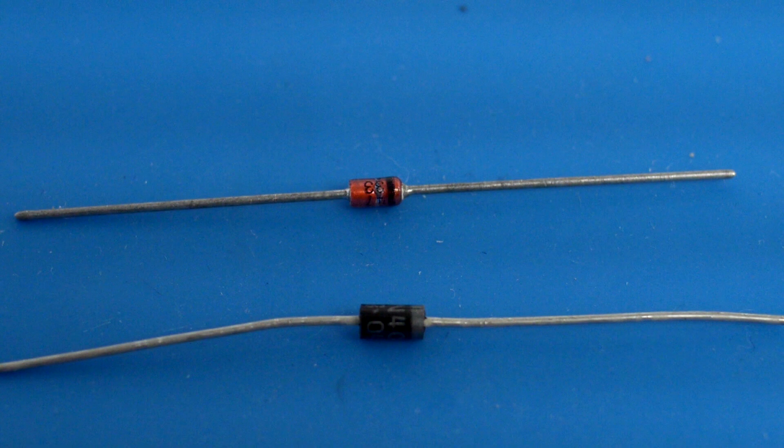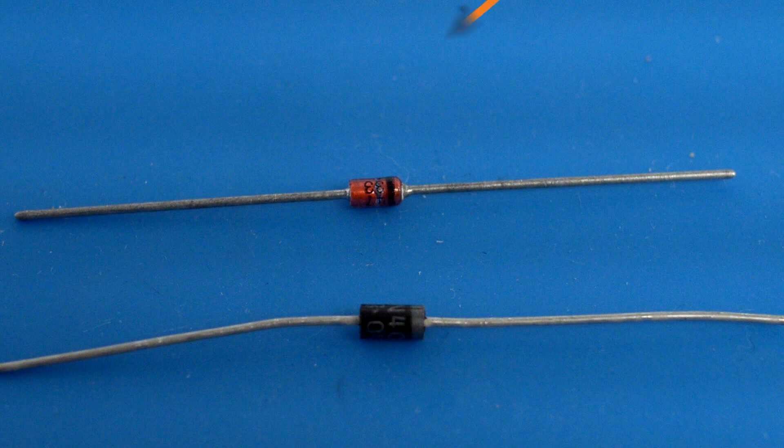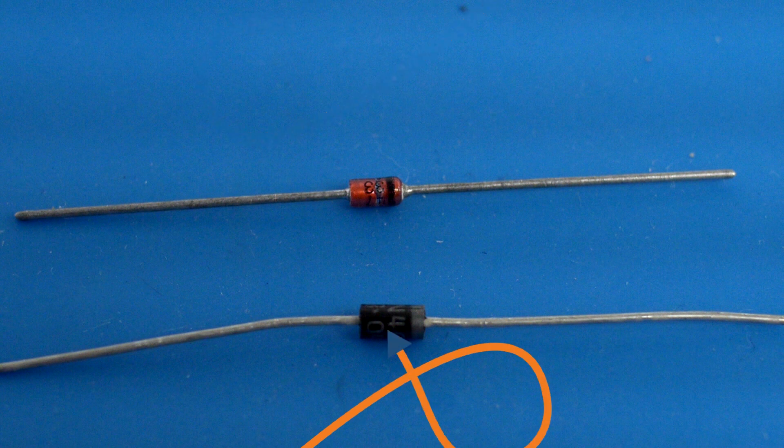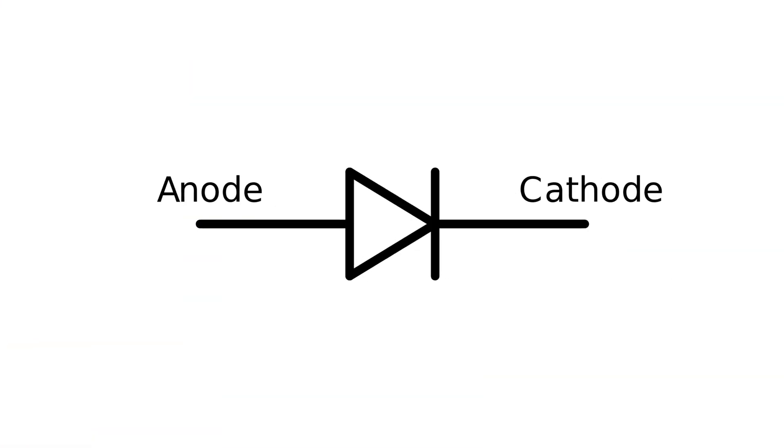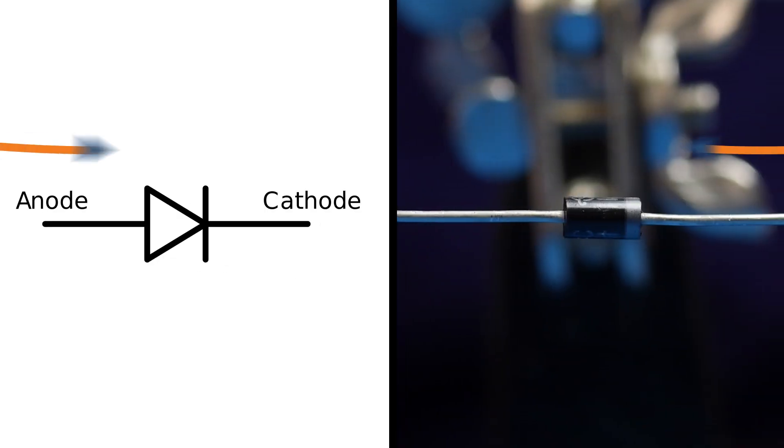Here are what most common diodes look like. They have two axial leads that come out of the ends. Some are clear, with reddish-orange on the inside and a black stripe on one end. Some are black, with a silver stripe on one end. The stripe indicates which end is the cathode, or the negative end. This is what the circuit symbol for a diode looks like. The line on the symbol matches up with the line on the diode itself.